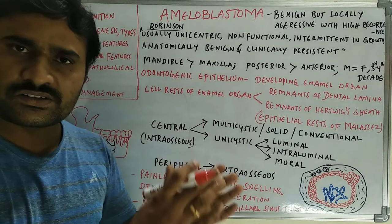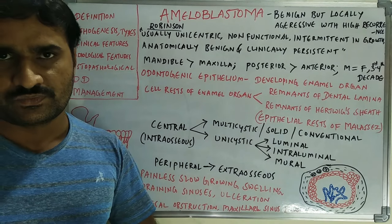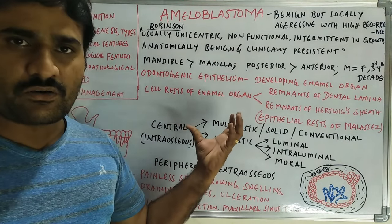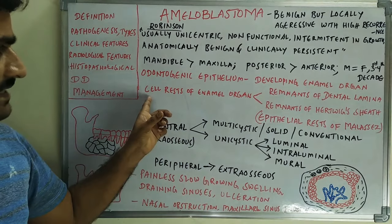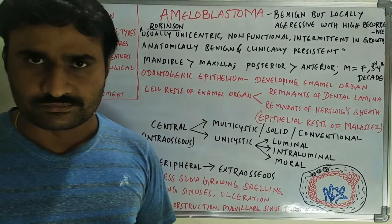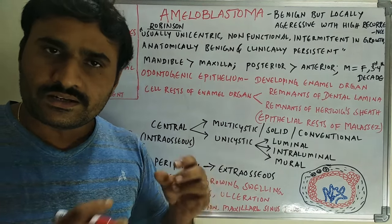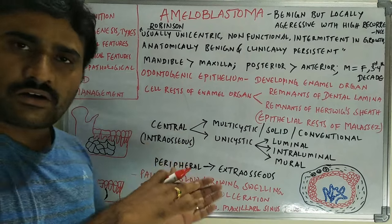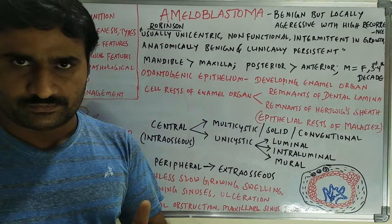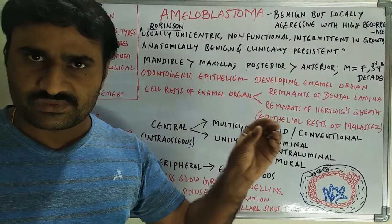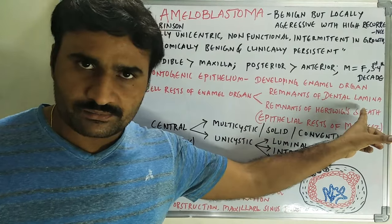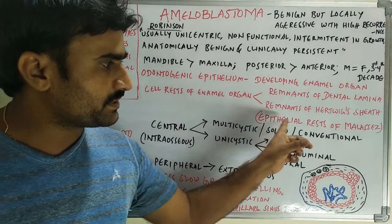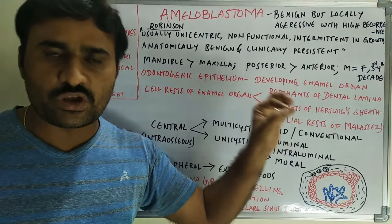Regarding pathogenesis, amyloblastoma originates from the odontogenic epithelium. From that odontogenic epithelium it may develop from a developing enamel organ, or cell rests — that is remnants of the enamel organ — which may be remnants of the dental lamina or remnants of Hertwig's epithelial root sheath.